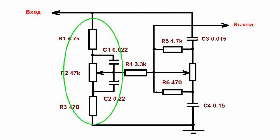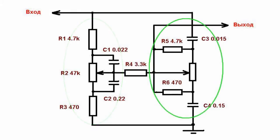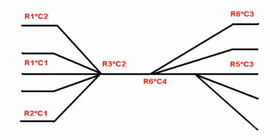R5, C4, R6, R7. When adjusting tone, the equalizer filter changes only the slope of the amplitude frequency response without changing the frequency of inflection.